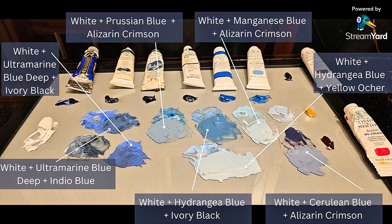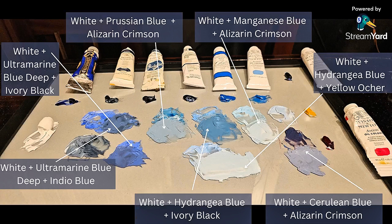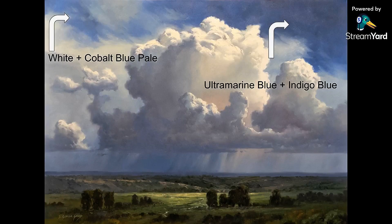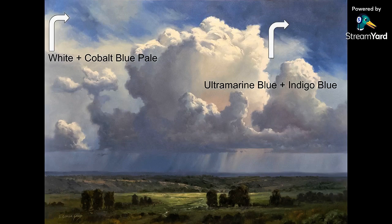These are all the mixtures I just took you through. I really want to point out that down in the bottom right-hand corner, that white, cerulean blue, and alizarin is a fabulous, fabulous gray — I think I'm going to start teaching with that in some of my clouds. You can get a screenshot now or pick it up at the blog. This painting has some of these mixtures I just showed you, except for the white and cobalt blue pale in the left-hand corner, which I didn't mix today.